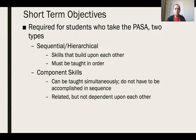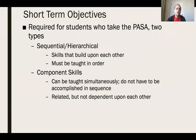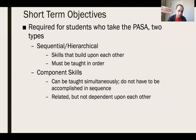Short-term objectives are required for students who take the PASA and can optionally be used for any student. There are two types: sequential objectives that build upon each other — such as 40%, then 60%, then up to 80% — and component objectives that can be taught simultaneously, like personal maintenance skills where toileting, tooth brushing, and using deodorant are all taught at the same time and are not dependent on each other.